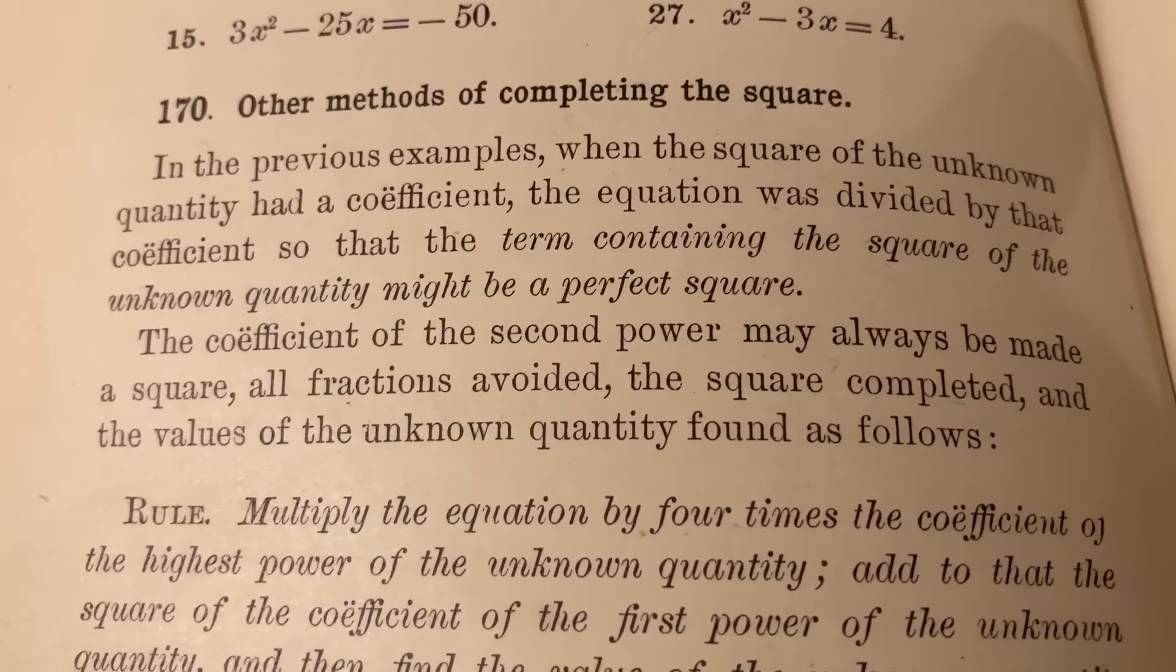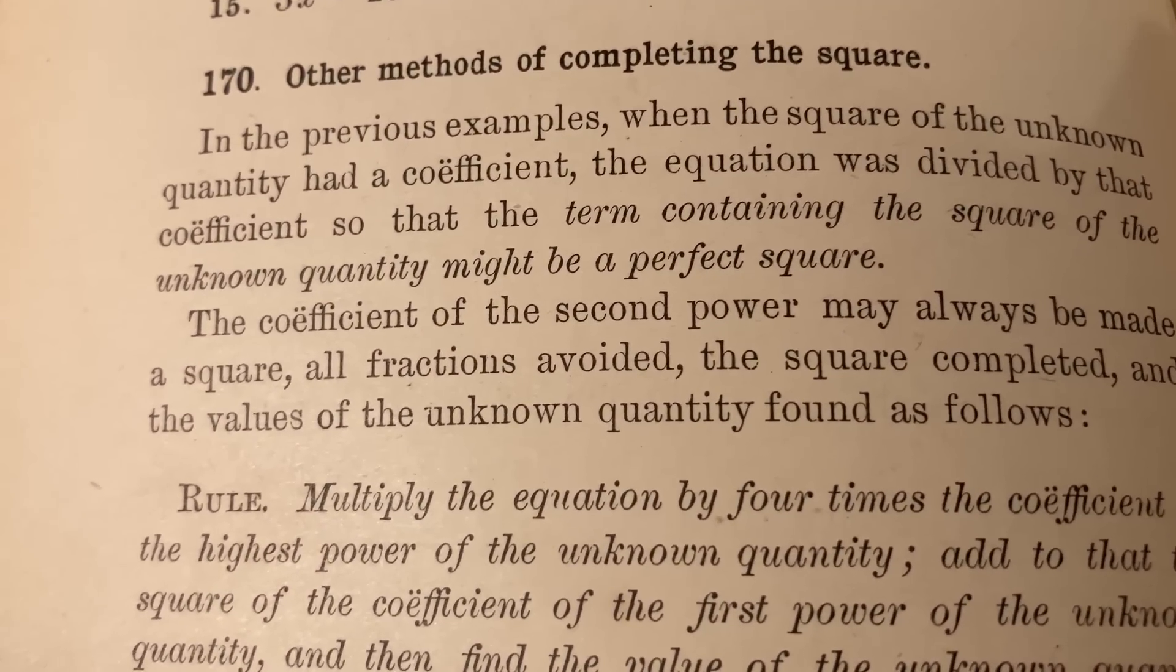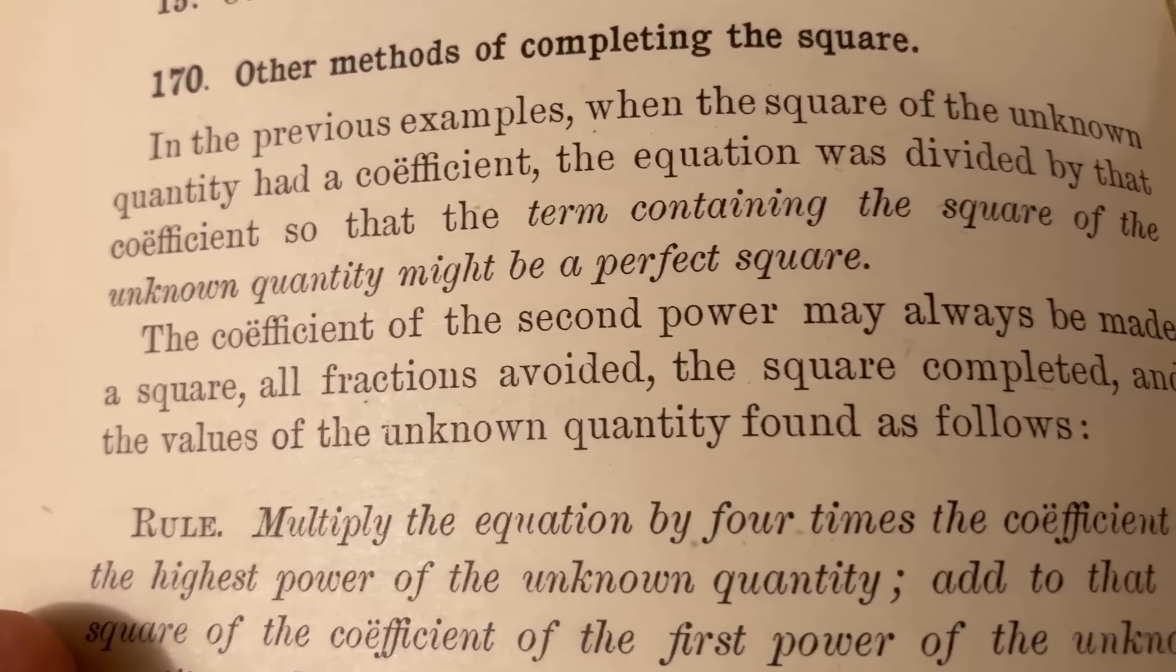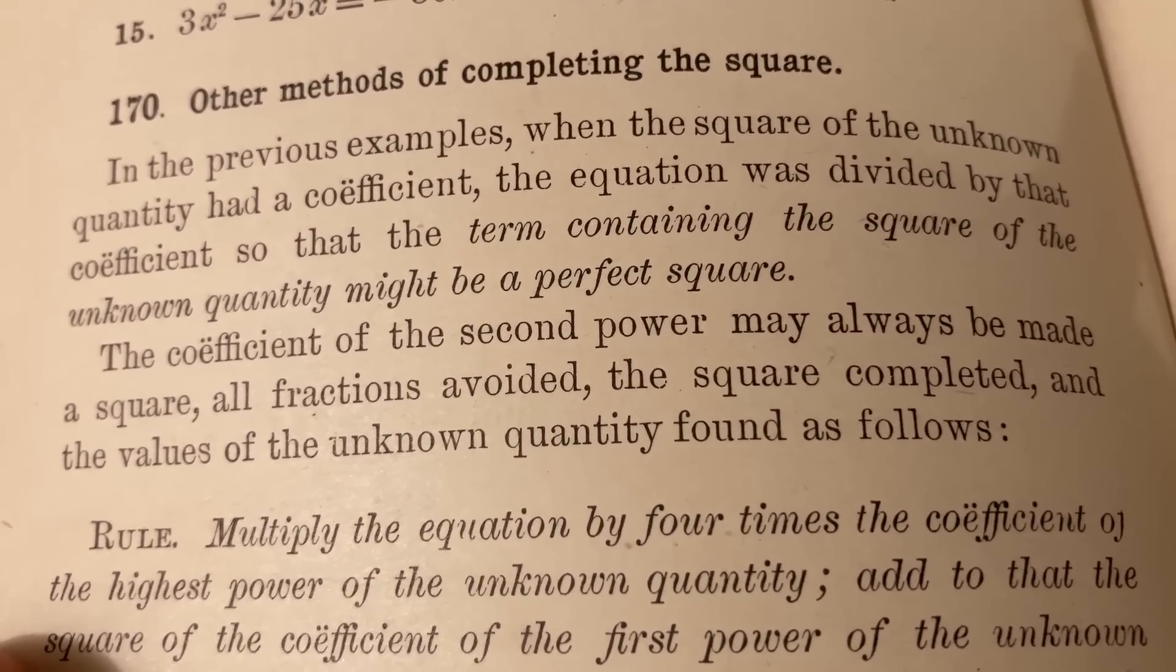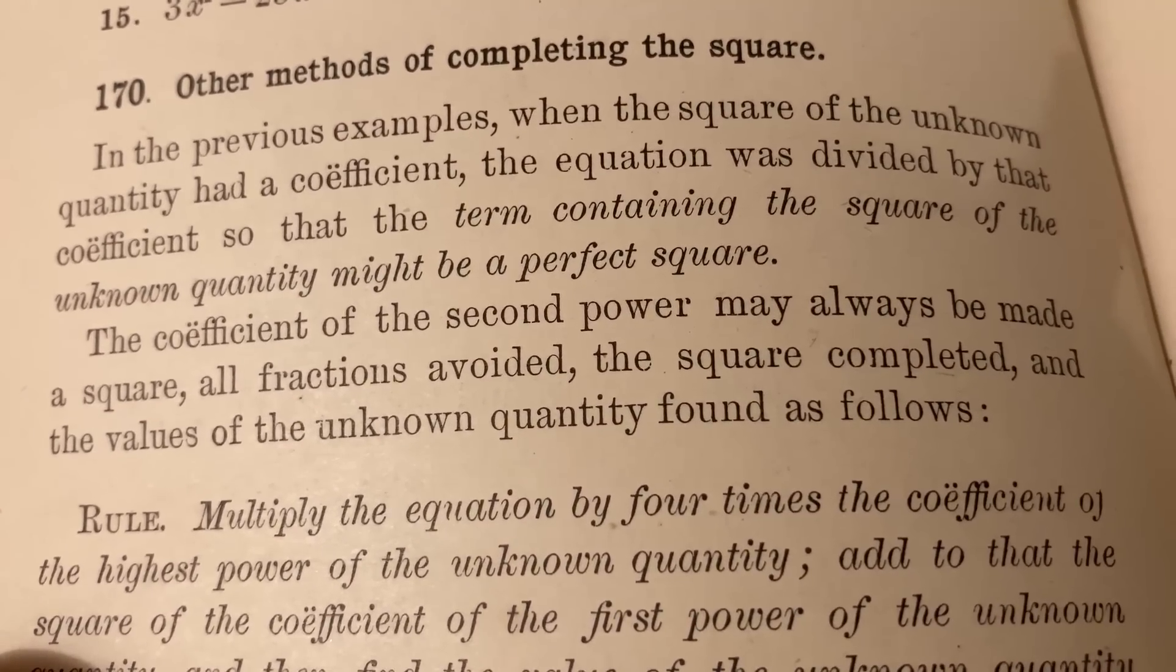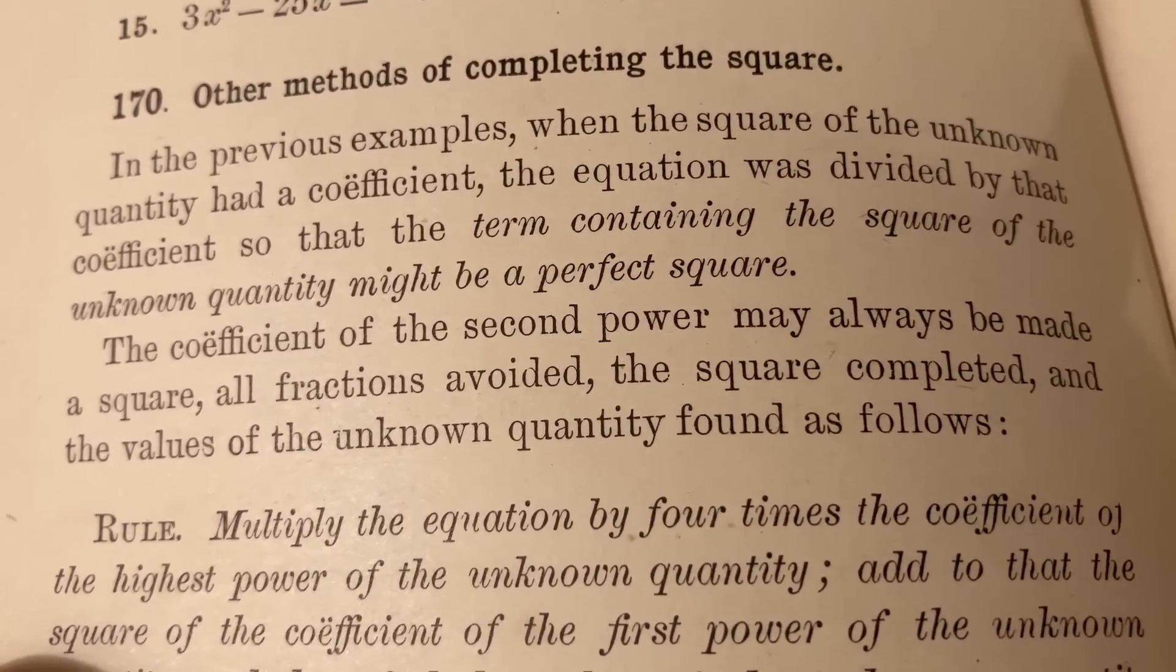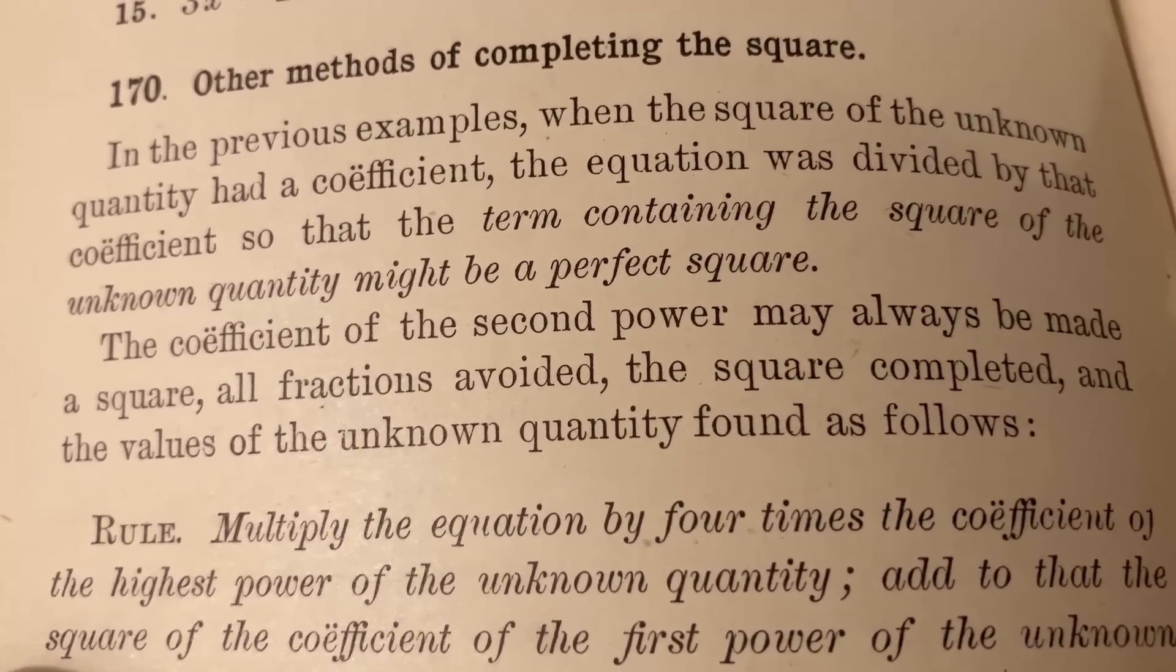So why is this method better in any way than the old method? Well, I think this explains it here. It says the coefficient of the second power may always be made a square. All fractions avoided, the square completed, and the values of the unknown quantity found. So basically, you can avoid fractions by using this method. And I think that is the appeal.